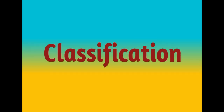Grouping things according to their similarities and differences is called classification. There are two types of animals: vertebrates and invertebrates.